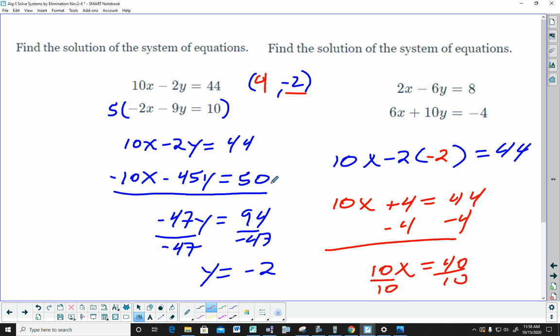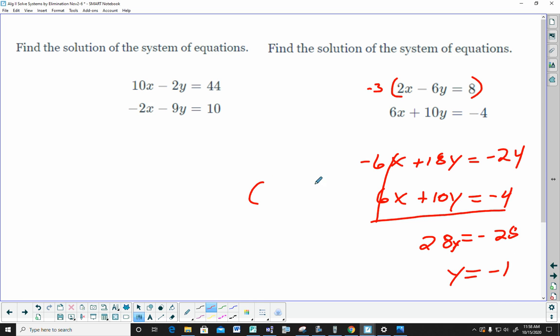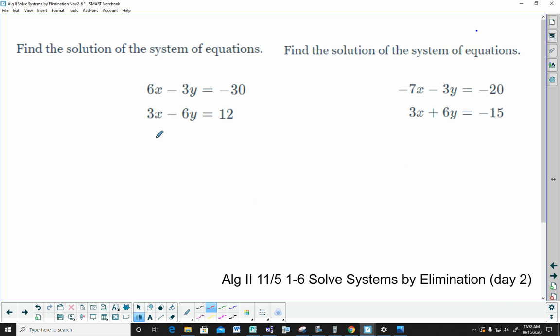You have to, once you find whichever variable, fill it back in to either equation and find the other value. So this one, let's say I'm going to go after the x's. I'm going to multiply this by negative 3. I need this to be a negative 6, so I'm going to multiply it by negative 3. Negative 6x plus 18y, I'm multiplying everything, equals negative 24. The bottom one is just the bottom one. When I add this together, this cancels. I get 28y is equal to negative 28, so y is equal to negative 1. Then again, you fill it back in to find your x. I just wanted to respect your time and keep this short, so I'm not filling it back in, but you need to.